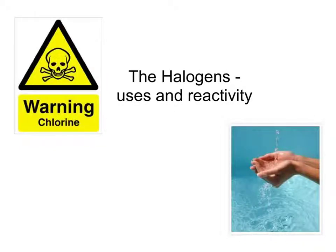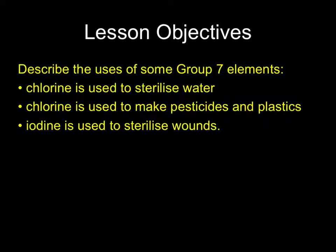This tutorial is all about the halogens, their uses and their relative reactivity. First we look at the uses of some of these group 7 elements, the halogens — three uses of chlorine and one of iodine that you need to know as facts.